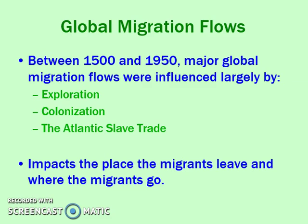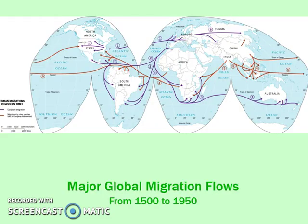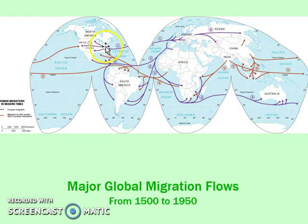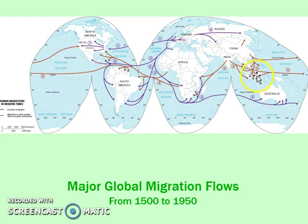In terms of where people migrate, this relates to migration flows: global, regional, and national. Global migration flow involves crossing large bodies of water — examples include exploration, colonization, and the Atlantic slave trade. Referring to the map, flows crossing large ocean expanses are global, while Russia's internal movement is national, and westward migration in the US is also national. Smaller regional flows that are still international but don't cross large bodies of water are regional migration, which we'll discuss next.